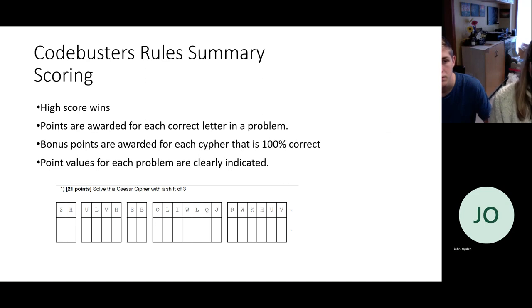And basically that just gives the teams freedom to pick and choose what type of problems they want to be able to solve. And the students can answer any questions in any order. The test usually will come in a folder and they can take the test apart. They can individually work on problems or they can work on problems together. There's no rules on that. High score wins in this. Points are awarded for every correct letter in the problem, so even if they didn't finish it, they can get partial credit for that problem. If they do finish it 100%, they will get bonus points on that problem.